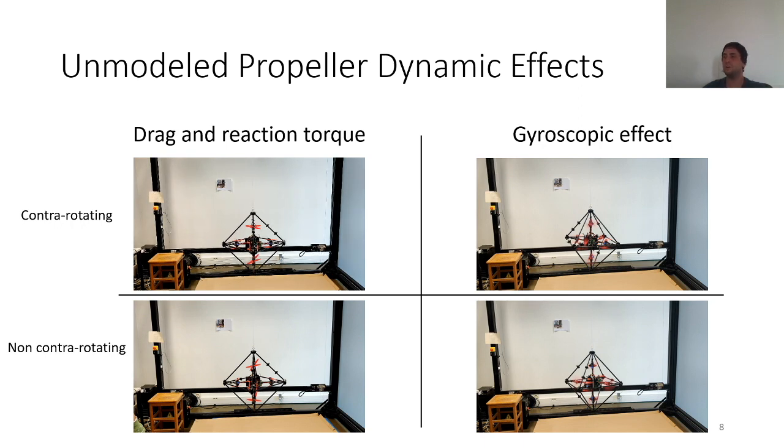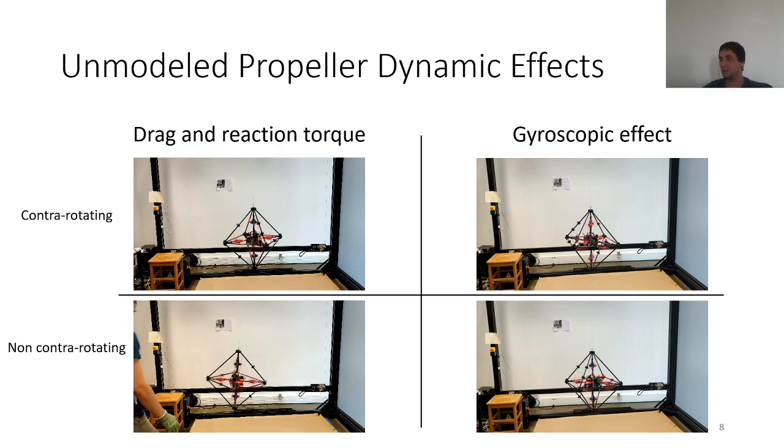Starting with the drag and the reaction torque. In this first video, we are using contra-rotating propellers, and we are generating a force in the Z direction, and we see that we have a small drag and a small reaction torque. Now, let's see what happens with non-contra-rotating propellers. Here, we are doing a really quite similar experiment. First, we see that when the motors are starting to rotate, we have some reaction torque that disturbs the system. But also, we notice that when we are generating the force in the Z direction, the drag and the reaction torque are more important. So we can notice that the contra-rotating propellers have a slight advantage for these effects, but it's nothing that we cannot compensate using feedback control.